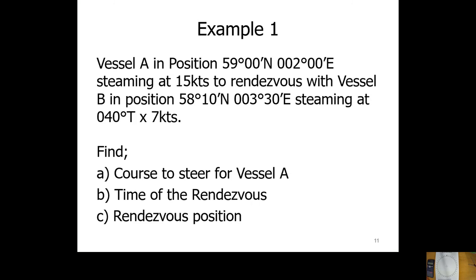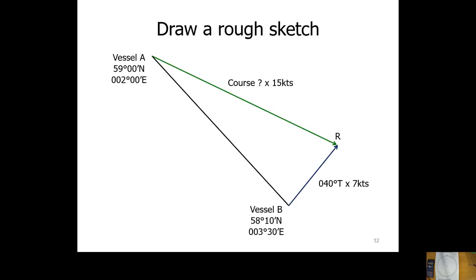To put the numbers in context: Vessel A is at 59°N, steaming at 15 knots. Vessel B is at 58°10'N, 3°30'E, steaming 040° at 7 knots. Vessel B will maintain its course and speed. The question asks for the course to steer, the time of rendezvous, and the rendezvous position. Always draw a sketch first — a common mistake is plotting vessel B's 040° at 7 knots from the wrong vessel's position, which reverses the entire plot.